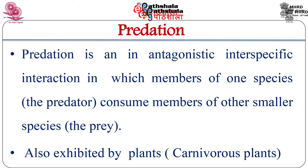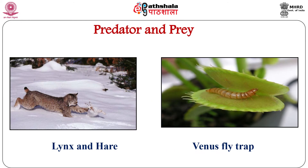Predation is an antagonistic inter-specific interaction in which members of one species, the predator, consume members of another smaller species, the prey. In most examples, both the predator and prey are animals, and the best known examples involve carnivorous interactions. Predation is also exhibited by a group of plants. Carnivorous plants such as Venus flytrap, bladderwort, and pitcher plant consume insects. Pitcher plants catch prey in a pool of water containing digestive enzymes, whereas the Venus flytrap captures an insect between two lobes of a leaf and seals it inside with digestive enzymes.